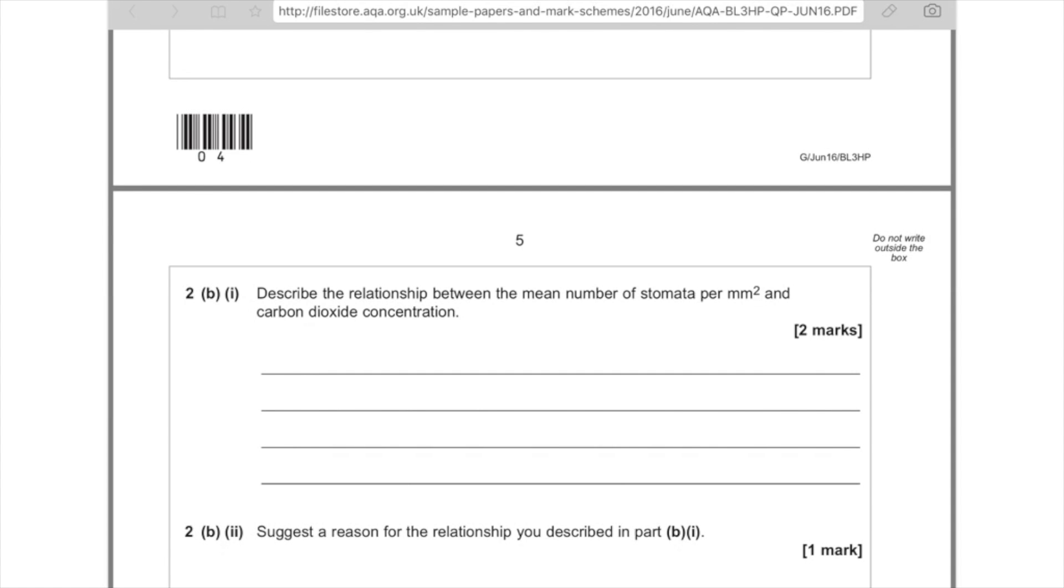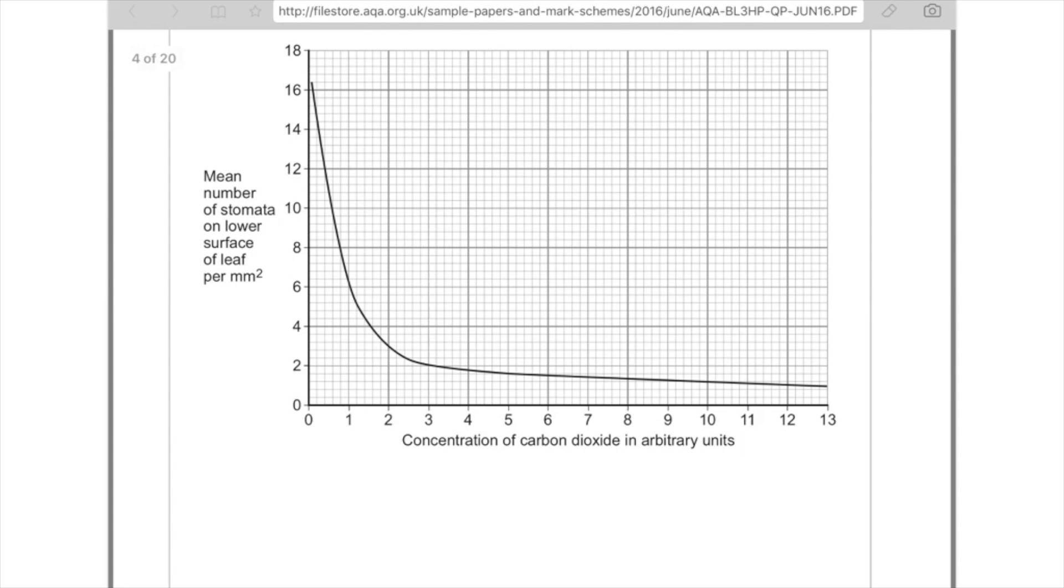Describe the relationship between the mean number of stomata per millimeter squared and the carbon dioxide concentration. And luckily, because I've had a good look at the graph, I already know what I need to say. So what you want to say here is that as the carbon dioxide levels increase, the mean number of stomata decrease. And for the second mark, you want to talk about the shape of the graph and say that there's a rapid drop initially.